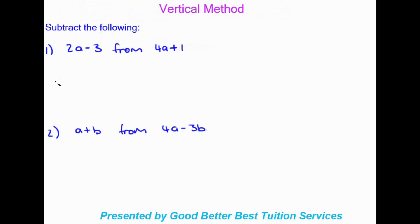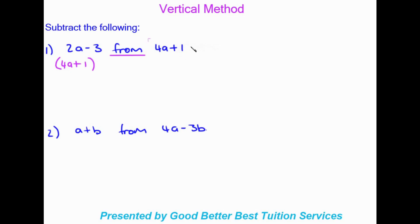Now we move on to the vertical method. Questions are typically presented in a specific manner. It says: subtract 2a minus 3 from 4a plus 1. Very important — when we see the word 'from', whatever comes after 'from' is what we write down first. So we write 4a plus 1 first, then put the expression being subtracted in brackets below it.